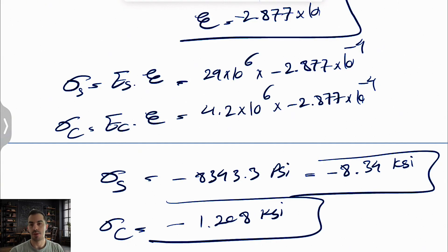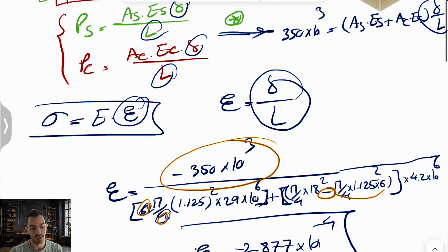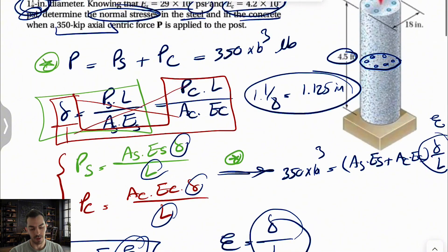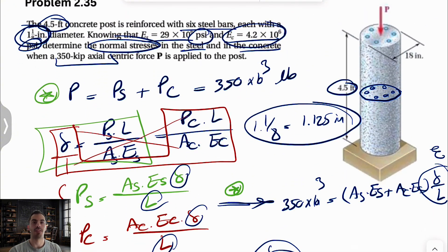It's all about the calculations, as long as we watch for the net cross-sectional area of the concrete by subtracting the steel bar areas. Let me know if you have any questions. Take care, see you in the next video!